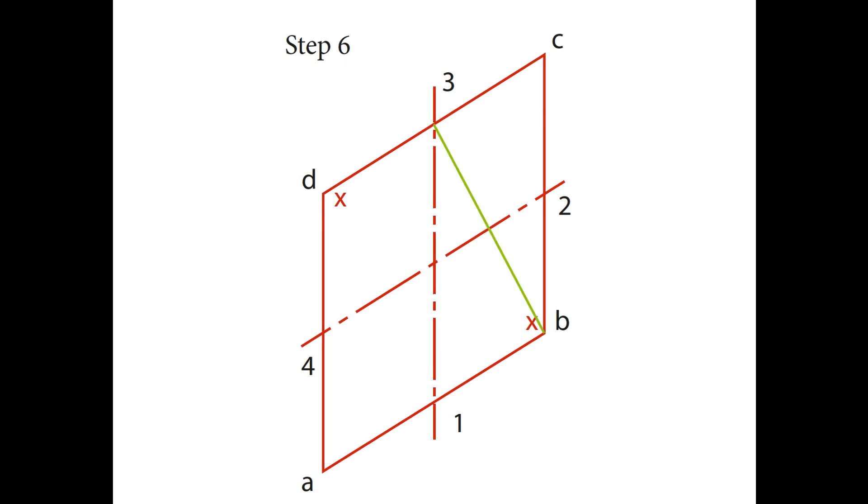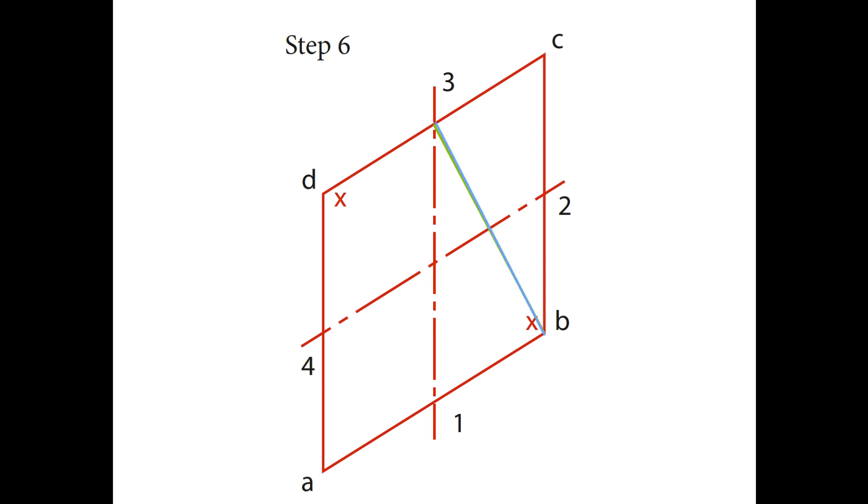Now draw a construction line from corner B to point 3. Draw a construction line from corner B to point 4.